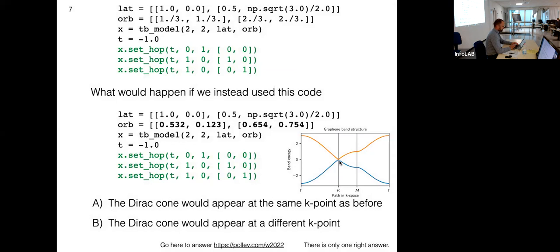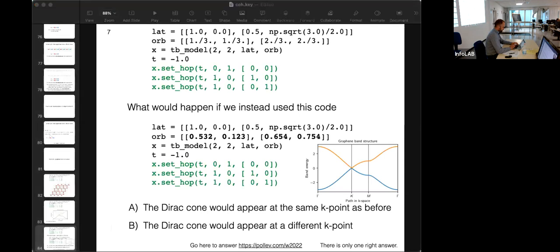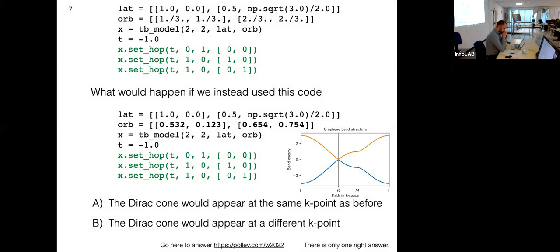If you did everything the same but placed random numbers for all orbital locations: option A says the band structure would be exactly the same with the Dirac point at the same K-point, two-thirds one-third; option B says the Dirac point would appear at a different K-point.